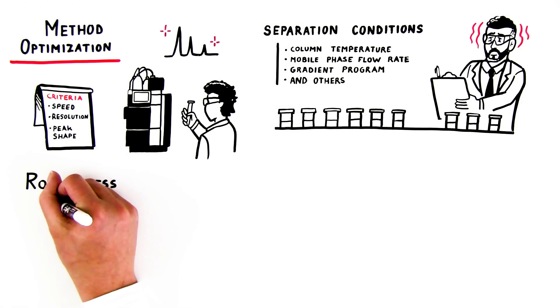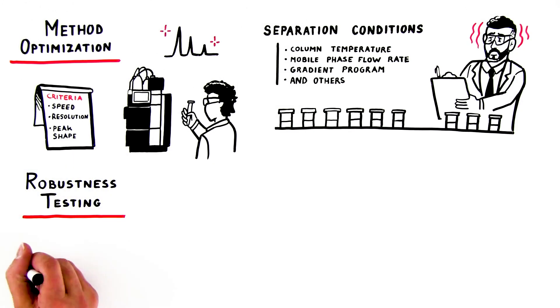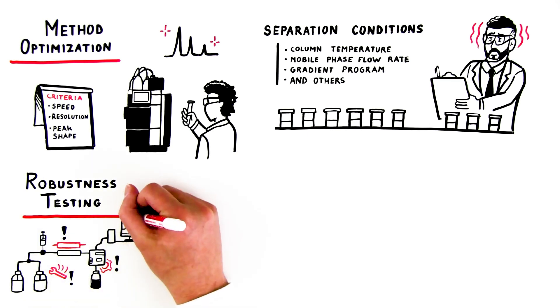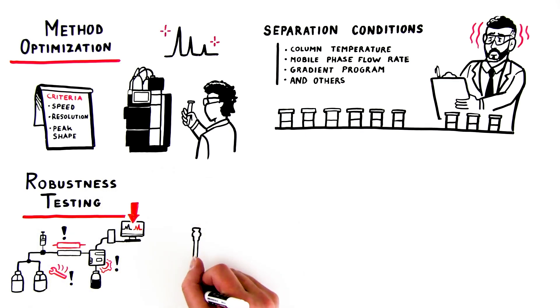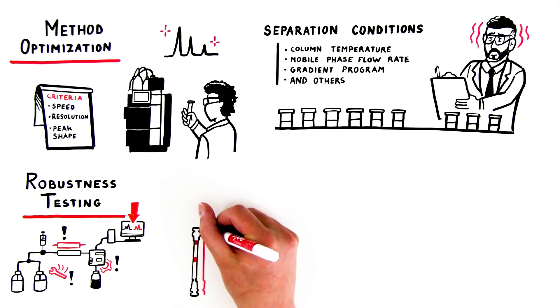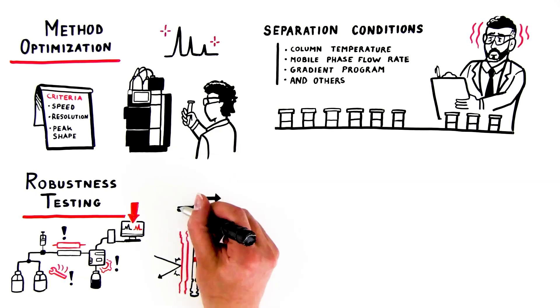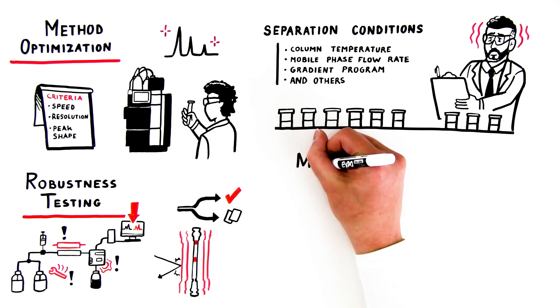Next is robustness testing. This involves deliberate variation of separation conditions to determine the impact on separation quality. This helps you build methods that are unaffected by small fluctuations in operating conditions and is helpful for downstream method validation and method transfer.